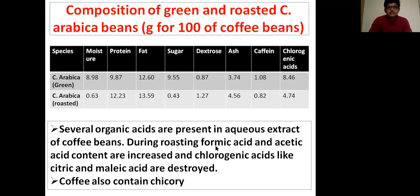Several organic acids are present in the aqueous extract of coffee beans. During roasting, carbonic acid and acetic acid content are increased, while chlorogenic acid, citric acid, and malic acid are destroyed. For example, chlorogenic acid is nearly 8.46% in green form and nearly 4.74% in roasted form — during the roasting process some acids are destroyed, decreasing their percentage.